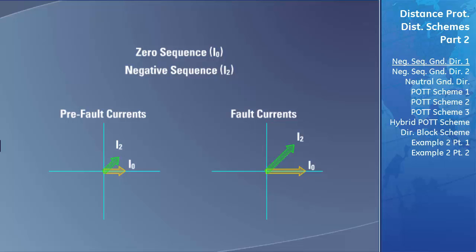The ground-directional elements are also very fast operating because the zero-sequence and negative-sequence currents build up from practically a zero pre-fault value. Also, since there was no ground current before the fault, the pre-fault zero-sequence and negative-sequence currents do not bias the direction of the developing fault components.